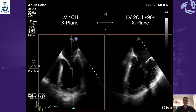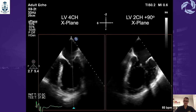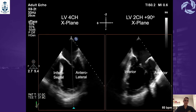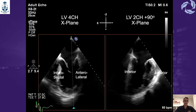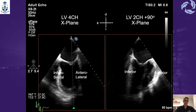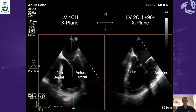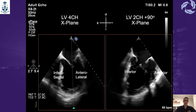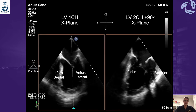Using X-Plane we can assess simultaneously four walls of the left ventricle starting at the four-chamber view. In this example, on the left side of the screen we are showing the LV four-chamber view where we have the inferoseptal and the anterolateral wall. By applying X-Plane over this view we generate a 90-degree plane shown on the right side of the screen, equivalent to the LV two-chamber view, exposing the anterior and inferior wall. Both views are simultaneously assessed and separated by 90 degrees.